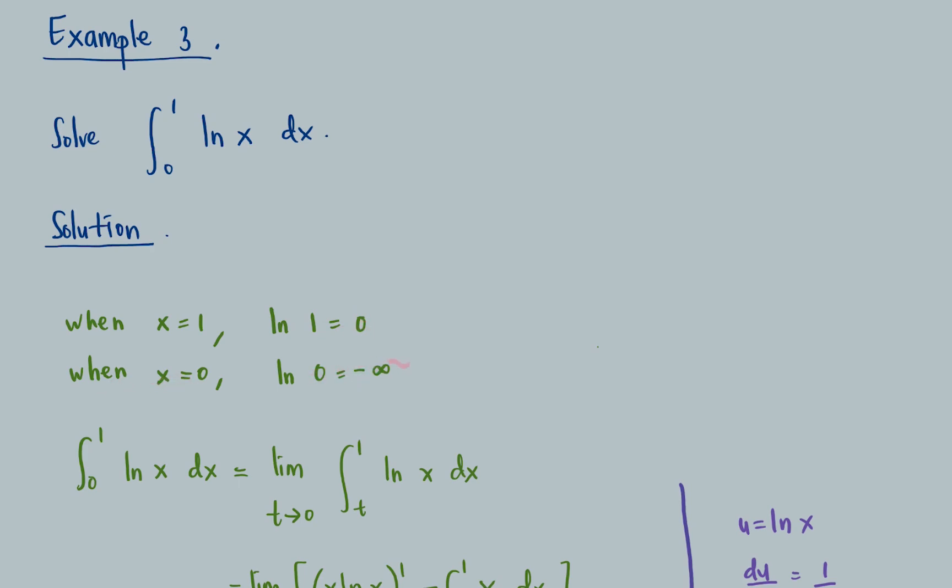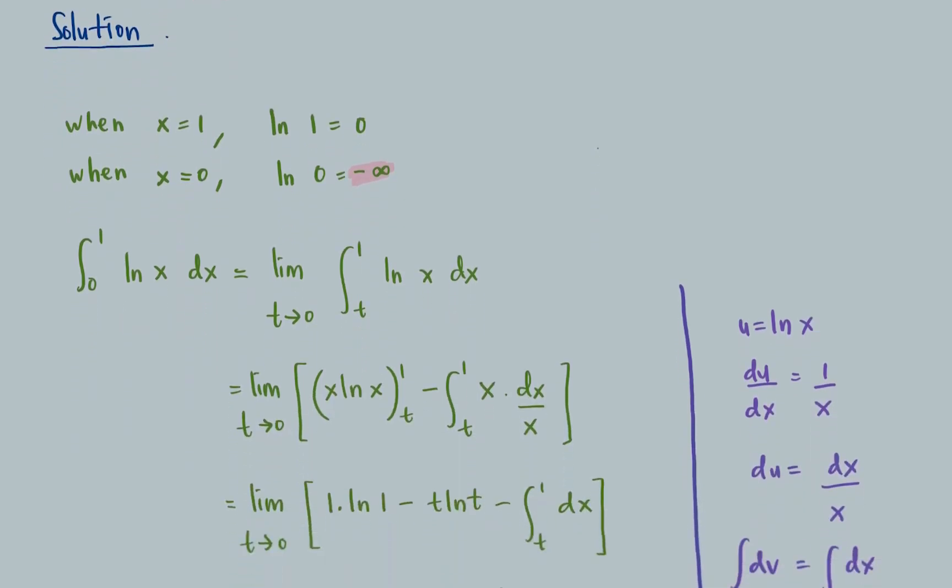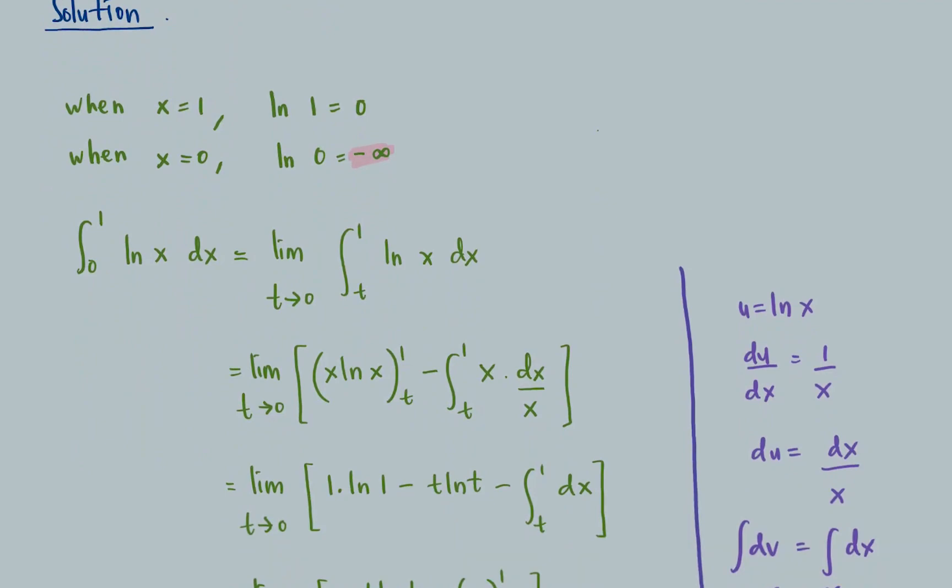ln 0 is negative infinity, which means this function ln x is discontinuous when x equal to 0. Because of that we need to rewrite the integral like this.